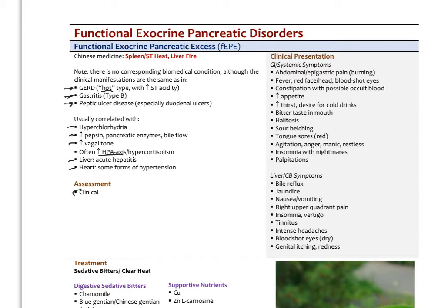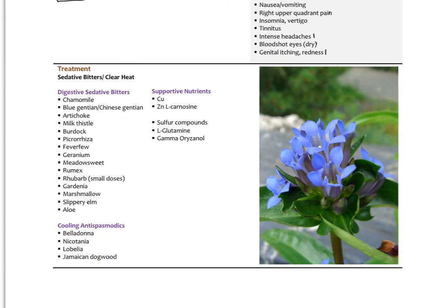Clinical assessment is based on history — there are no specific labs. Symptoms lean toward burning: everything made worse by heat, pressure, spicy food, and acid. On the mental-emotional level: agitation, mania, restlessness, palpitations, insomnia. Liver-gallbladder symptoms can include jaundice, bile reflux, right upper quadrant pain, intense headaches, and bloodshot eyes. In Chinese medicine the liver channel goes to the inguinal canal, so genital or inguinal fungal infections are often linked to that channel.